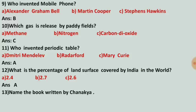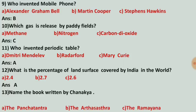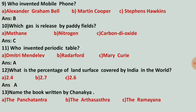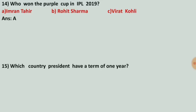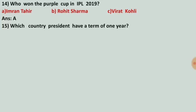Name the book written by Chanakya. Options are Panchatantra, Arthashastra, and the Ramayana. The correct answer is number B, Arthashastra. Who won the Purple Cap in IPL 2019? Options are Imran Tahir, Rohit Sharma, and Virat Kohli. The correct answer is number A, Imran Tahir.